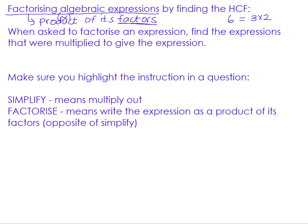With an algebraic expression, it's a little bit more complex because you have to find the original expressions that were multiplied together. In effect, you are doing the opposite of what you did when you multiplied things out. You are given the answer of a multiplication question and you are asked to tell the marker what the factors were that were multiplied together. So it can get confusing, and it's often useful to highlight the instructions in a question so you're clear on what you need to do.